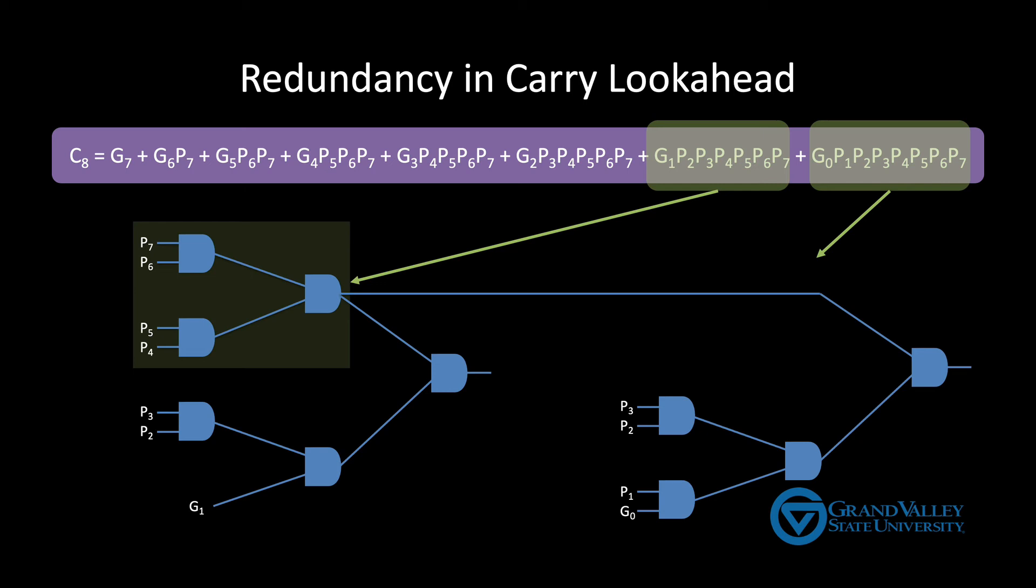Now, I don't know whether finding and eliminating this type of redundancy alone can change the big O growth rate, but it certainly allows us to make the circuit considerably smaller.